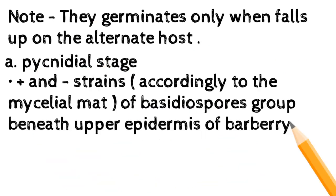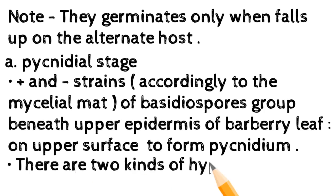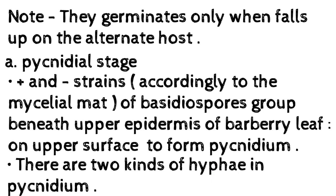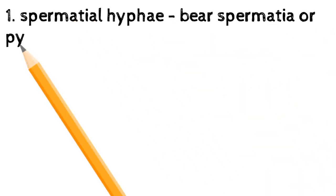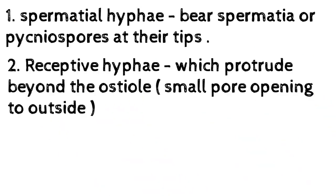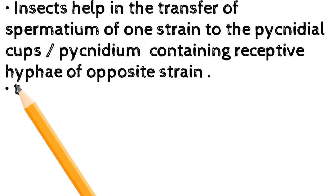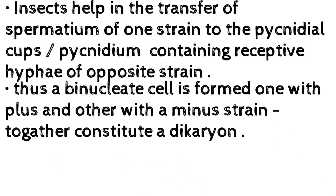A) Pycnidial stage: the plus and minus strains of basidiospores, according to their strain, form a mycelial mat beneath the upper epidermis of the barberry leaf, on the upper surface, to form a pycnidium. There are two kinds of hyphae in the pycnidium: 1) spermatial hyphae, which bear spermatia (pycniospores) at their tips; 2) receptive hyphae, which protrude beyond the ostiolе — the small pore opening — outside. Note: each pycnidium gives rise to either minus or plus strains of spermatia and receptive hyphae. Insects help in the transfer of spermatia of one strain to the pycnidial cups containing receptive hyphae of the opposite strain. Thus a binucleate cell is formed, one with a plus and another with a minus strain, together constituting a dikaryon.